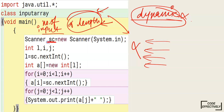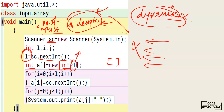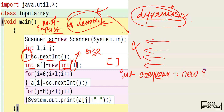sc is the name of the Scanner object, so sc.nextInt() is used to read the next integer from the keyboard. After this, since we now know the length of the array, we can create it. We create a single-dimension integer array: int a[] = new int[l], where 'new' is used for object creation, 'int' indicates an integer-type array, and l is the size.